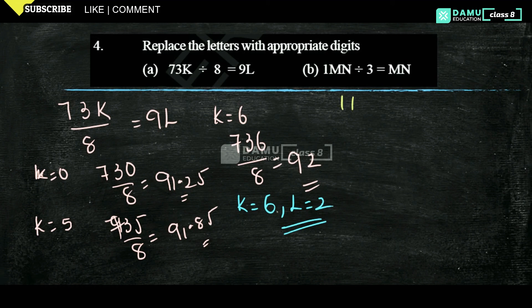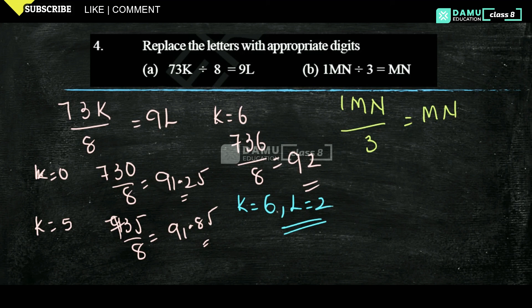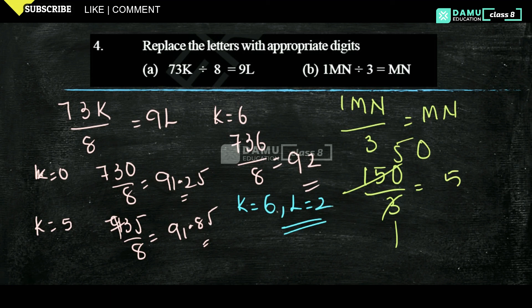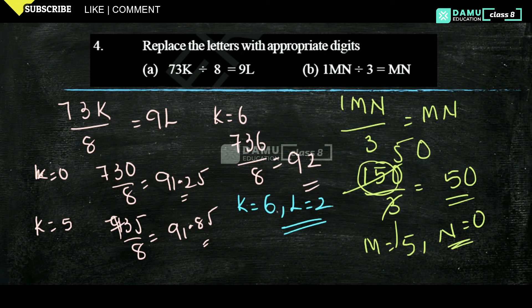Our next one: 1MN divided by 3 equals MN. Let N be 0. What number divided gives M the same? If 150 by 3: 3 into 15 is 5, remainder 0 — we get 50. So M equals 5, N equals 0. That is the number to take so the same digit appears.